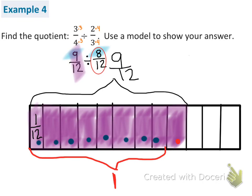But the problem is I only have 1 left, which is 1 out of 8. And that's exactly what I'm going to write. So I can conclude that 9 twelfths divided by 8 twelfths is 1 and 1 eighth.